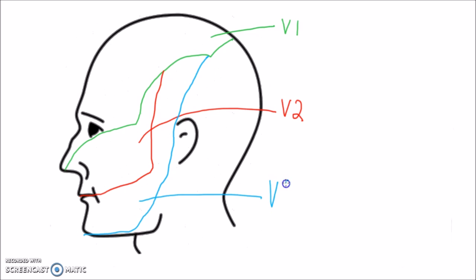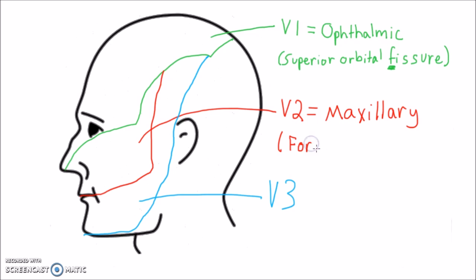These branches exit from three separate foramina: the superior orbital fissure, the foramen rotundum, and the foramen ovale.